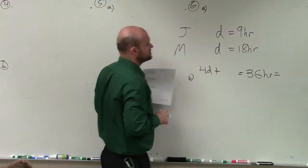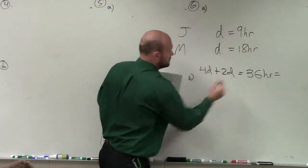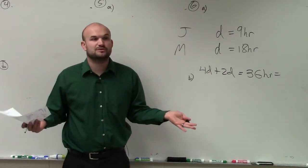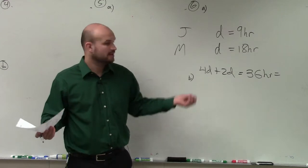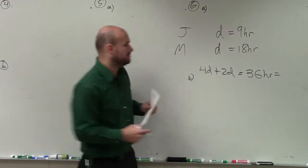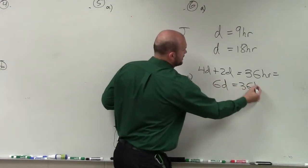plus how many driveways could Mitch do? Two. Does everybody see what I did? If we gave them 36 hours and say do as many driveways as you can at your rate, working together, we'd have four driveways by Joseph, two driveways by Mitch. Together they'd be able to do six driveways in 36 hours.